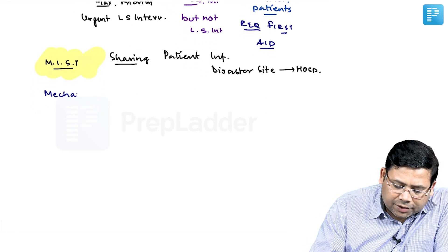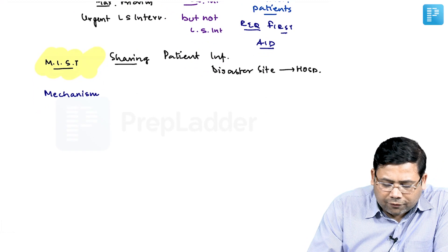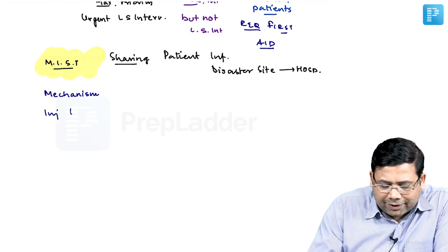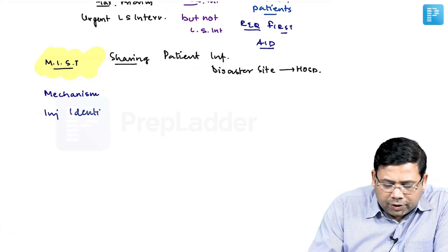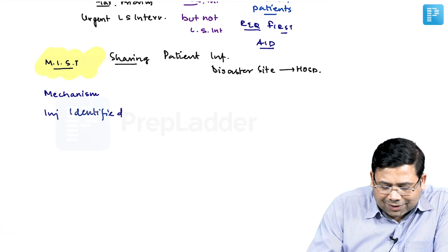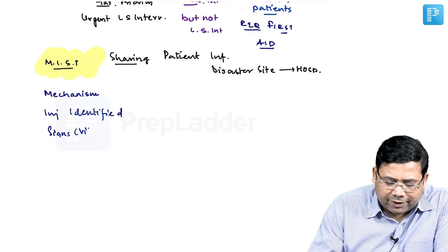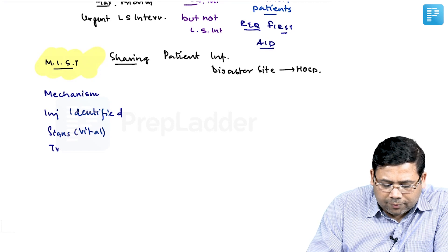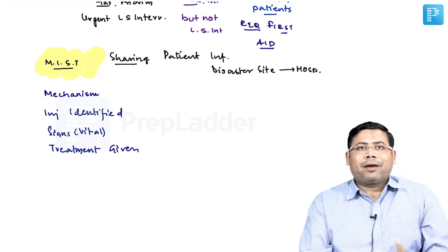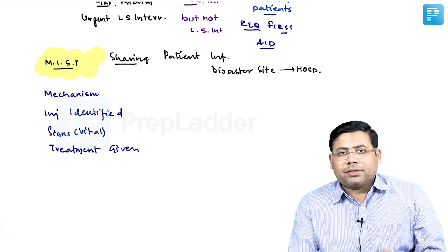You have to mention the mechanism of injury, the injuries identified, and the vital signs at the site of accident. Then you need to mention the treatment which has already been given, so that you do not replicate or triplicate the same management.